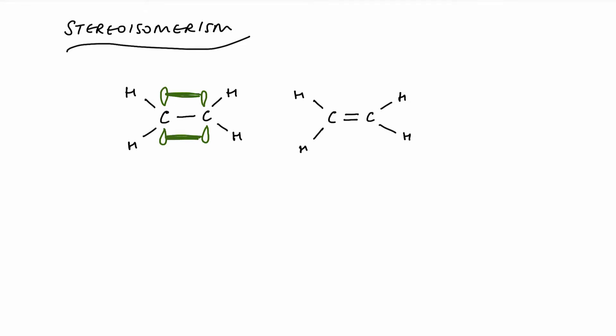With an alkene, we have a double bond between two carbon atoms, and that double bond consists of a pi bond and a sigma bond. If this is completely new to you, I suggest you stop here and go back and look at the video on sigma and pi bonding.